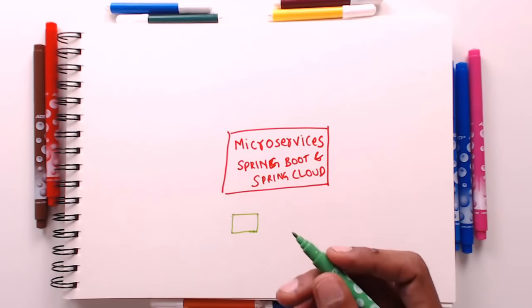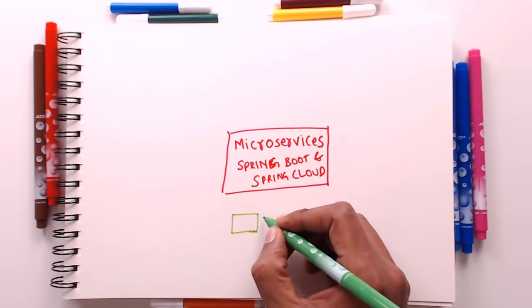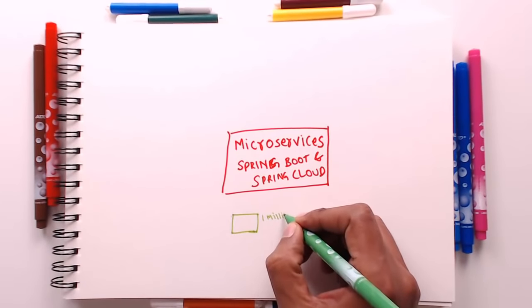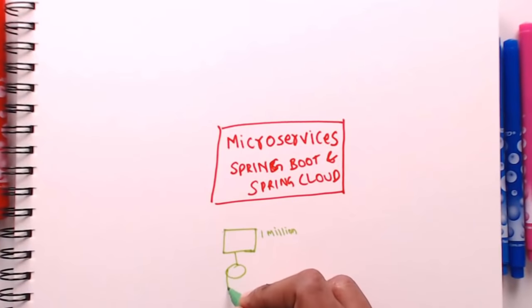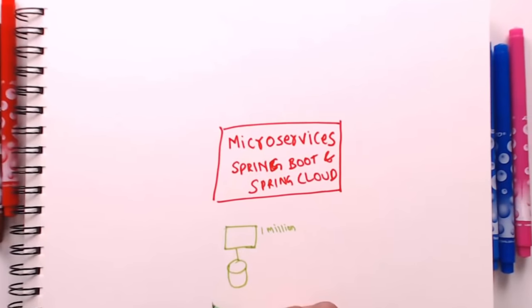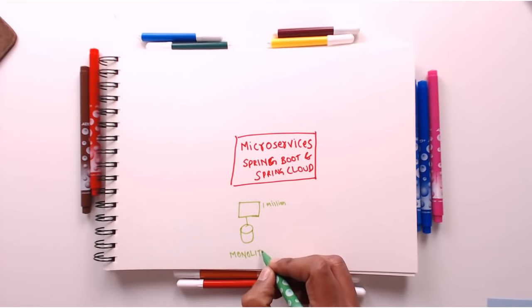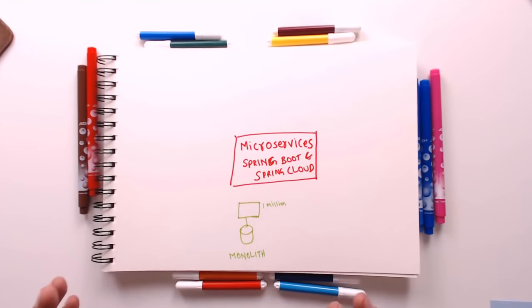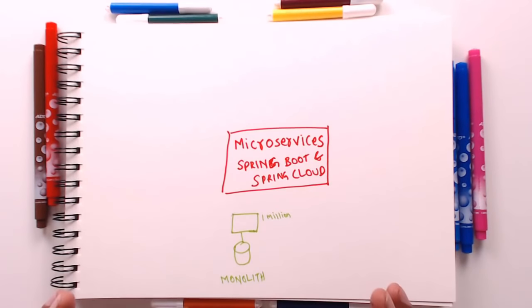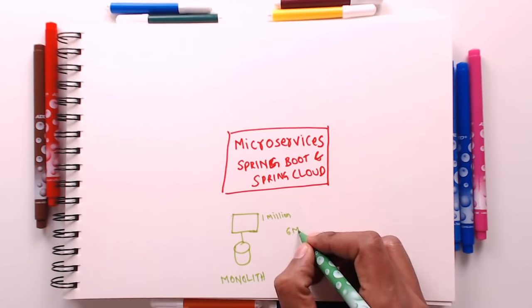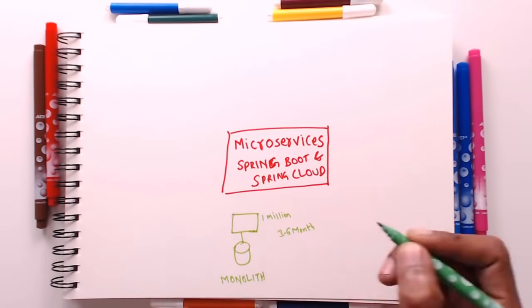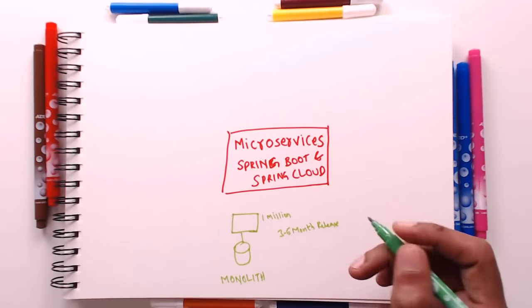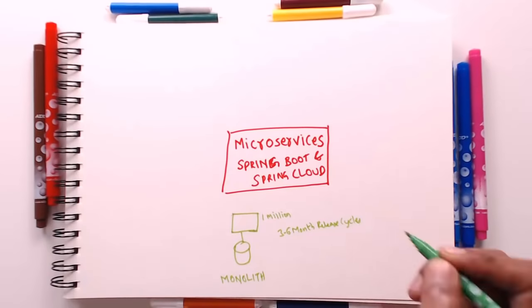If we go a decade back, the typical applications that were built are all monolith applications. We are talking about applications which have one million lines of code, they talk to one database, and this database might have a lot of data. These are called monolith applications, and the problem with these monolith applications is that they are very very difficult to maintain, with three to six month release cycles.